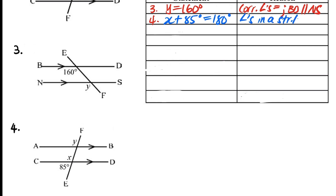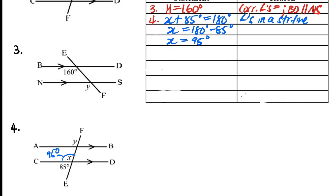So x is equal to 180 degrees minus 85 degrees, which gives us 95 degrees. Now, y and x are corresponding angles, so y is equal to x. Therefore y is equal to 95 degrees. The reason: corresponding angles equal because line AB is parallel to CD.